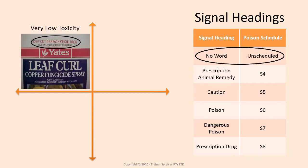All chemical labels will have the warning 'keep out of reach of children' at the top. If there is no word above this, then the concentrated chemical is classified as unscheduled and is of the lowest toxicity and not considered to be a poison.